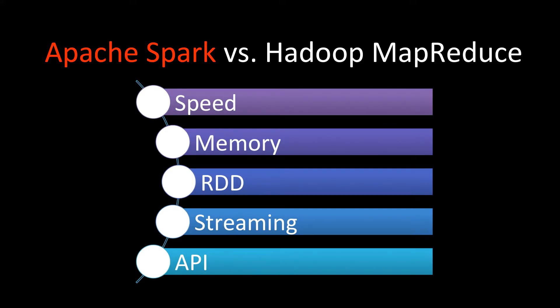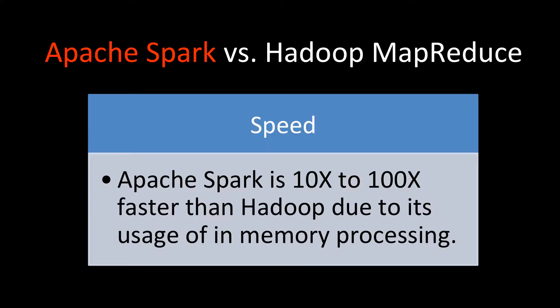In Apache Spark, the claim is that Spark is 10x to 100x faster than Hadoop due to its usage of in-memory processing. In the case of memory-based processing, it is up to 100x faster, and with disk usage it is 10x faster. So Spark is much faster than Hadoop MapReduce.